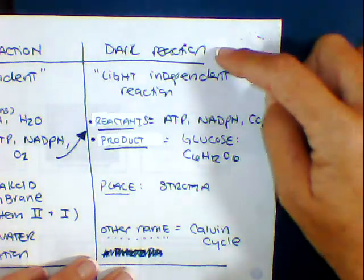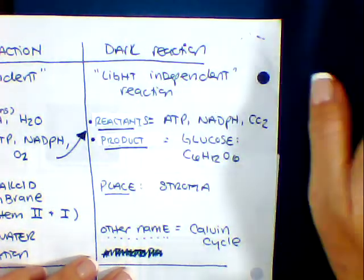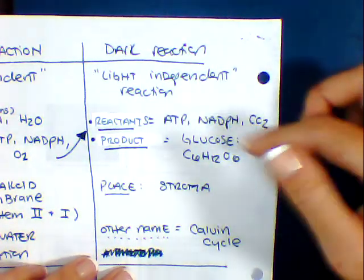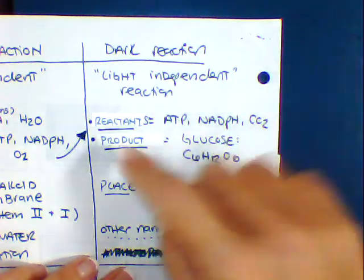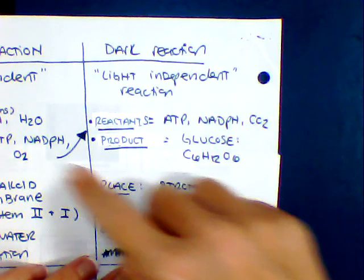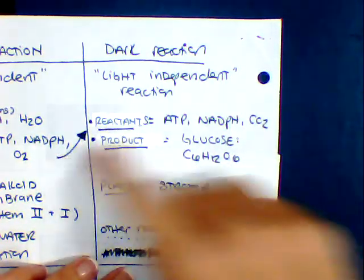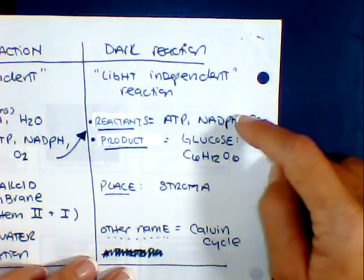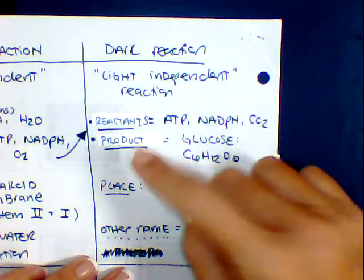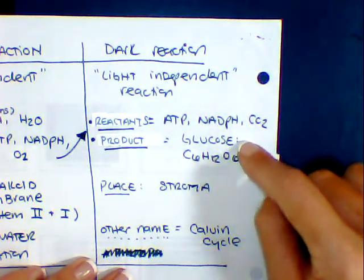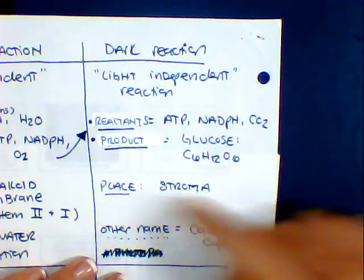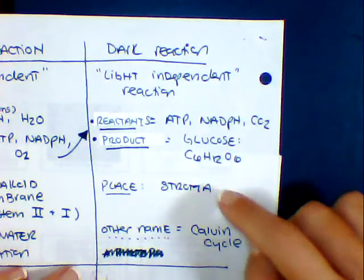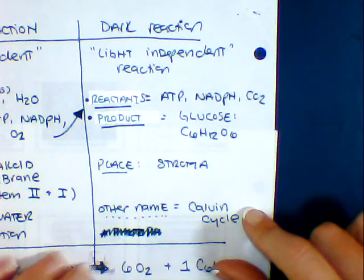Okay, so the dark reaction is also known as light independent. We don't need light in order for this to happen. However, this does happen during the day, so just don't get confused. Our reactants become our products. We're going to take our energy as well as our CO2 coming in from the atmosphere. Our products, what we're walking out of the store with, is going to be your sugar, one molecule of glucose. This takes place in the stroma, which is the empty fluid region of a chloroplast. Another name for this cycle is the Calvin Cycle.